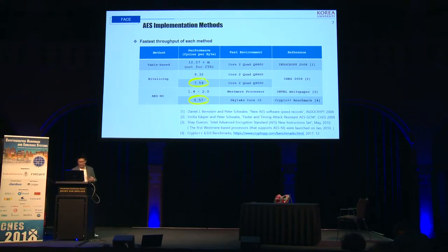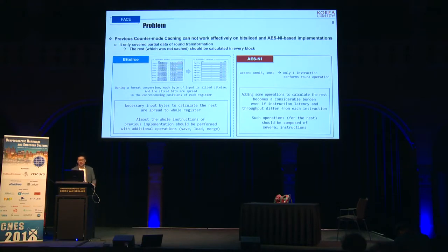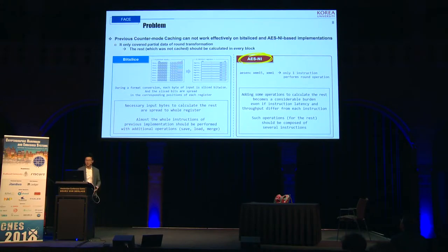In order to record improved performance, someone might try to leverage the existing Counter-Mode caching technique. However, such an attempt cannot succeed easily. Previous Counter-Mode caching is not effective on bit-sliced and AES-NI-based implementations — it only covers partial data of the round transformation, so the rest not covered by caching should be calculated in every block. For example, in the case of AES-NI, a round operation can be done using only one AES-NI instruction, so adding extra operations to calculate the rest becomes a considerable burden, not a benefit. Therefore, previous Counter-Mode caching has only been applied to table-based implementation to show its efficiency.